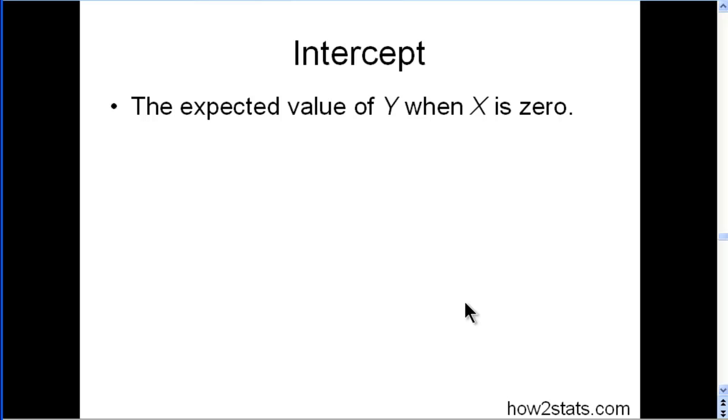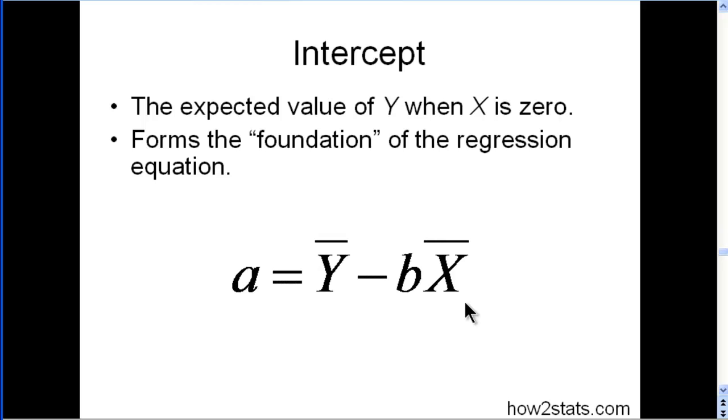Intercept. The expected value of Y (colds) when X is zero (stress). So if somebody had stress levels of zero, how many colds would we expect them to experience over the year? That's the variable in Y. It forms the foundation of the regression equation in the sense that we start off with the intercept and then we build from there. The intercept is the same thing for everyone. We start off with a common value for all our observations, and then we build on from there based on the slope.